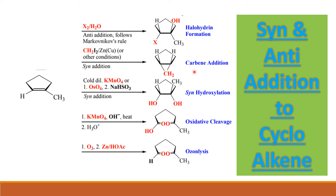The next one is carbene formation. How is the carbene forming? In diiodomethane — in the presence of diiodomethane with zinc or zinc-copper — this undergoes a syn addition; both undergo a syn addition. Here, cold dilute KMnO4 or osmium tetroxide: osmium tetroxide undergoes a syn addition only. Both OH groups will add on the same side. These two are oxidation reactions.